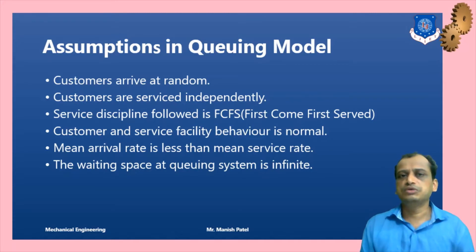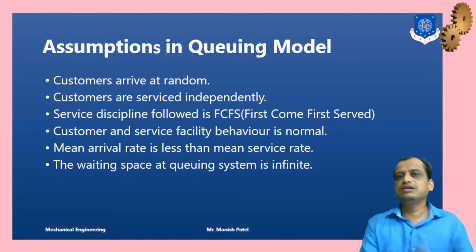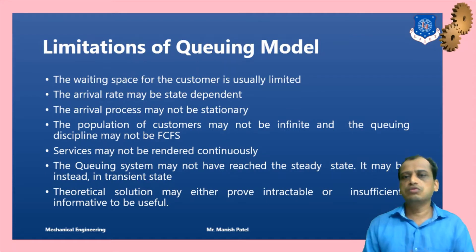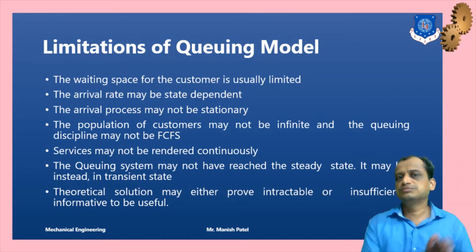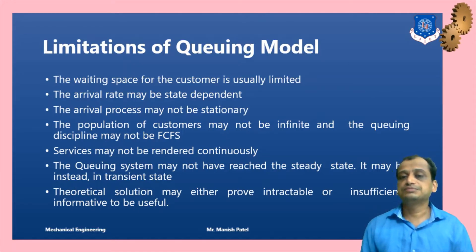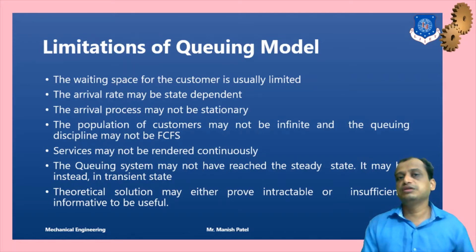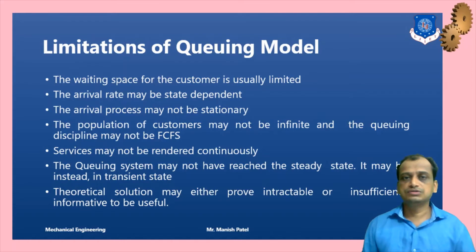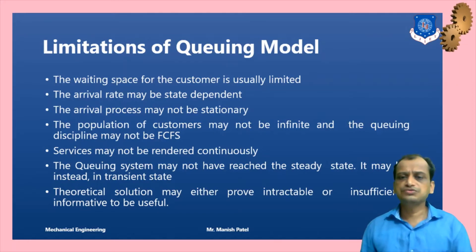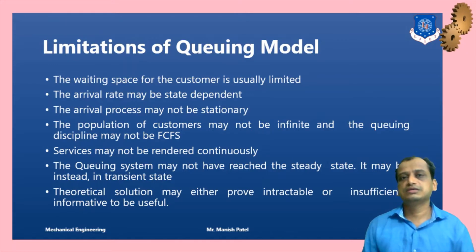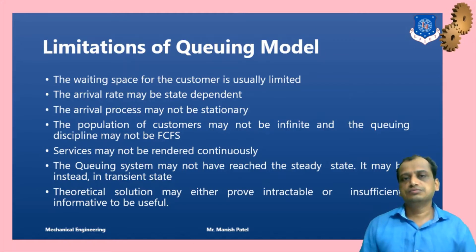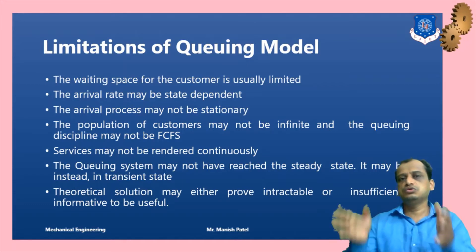These assumptions are essentially the limitations of the queuing model. It is not always the case that limited waiting space exists — we have assumed infinite. Stage-dependent arrival rate means arrivals are not always stationary as assumed; they can be dynamic. FCFS is not always the case — there can be service in random order, last come first serve, or priority disciplines. Also, a steady-state queuing system is not necessarily the case in transient conditions. Sometimes solutions do not provide complete information about the system.